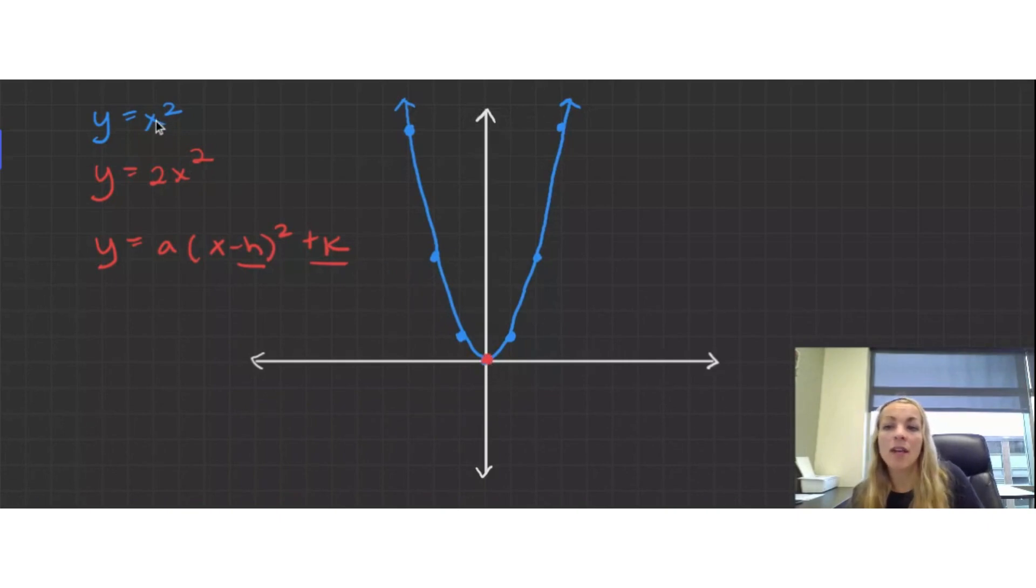Now, normally, I take 1 and I square it and get 1. But now I'm going to go 1 and I'm going to multiply that value by 2 because I have a vertical stretch factor of 2. So I'm going to go over 1, up 2. Now I'm going to do 2. So normally, 2 squared is 4, but I'm going to double that 4. So 4 times 2, because that's our stretch factor, is 8. So I'm going to go over 2, up 8.